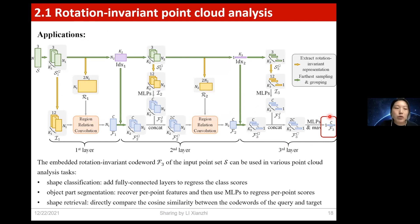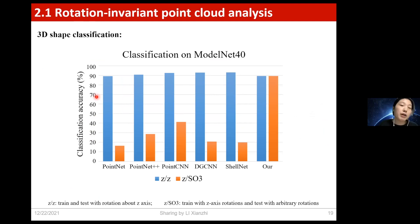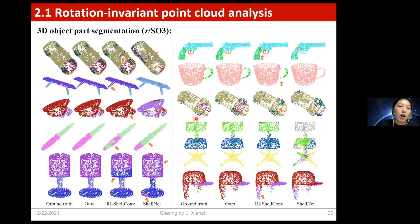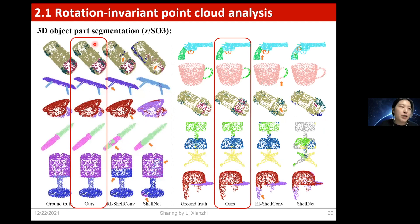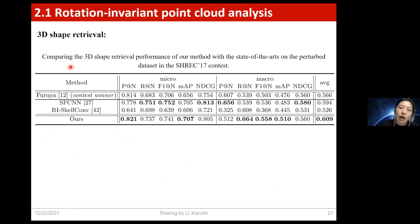Once we obtain the embedded rotation invariant codeword, we can do various applications including shape classification, object part segmentation, and shape retrieval. For shape classification, our method shows no performance drop even when tested on arbitrary orientations. For object part segmentation, our method produces results closest to the ground truth in visual comparison. For shape retrieval, our method achieves the best average score with a significant margin.